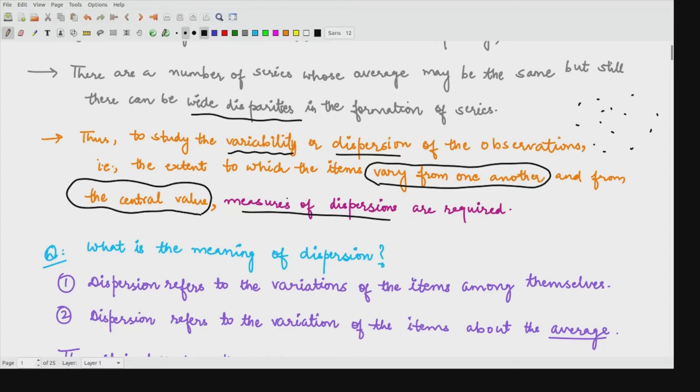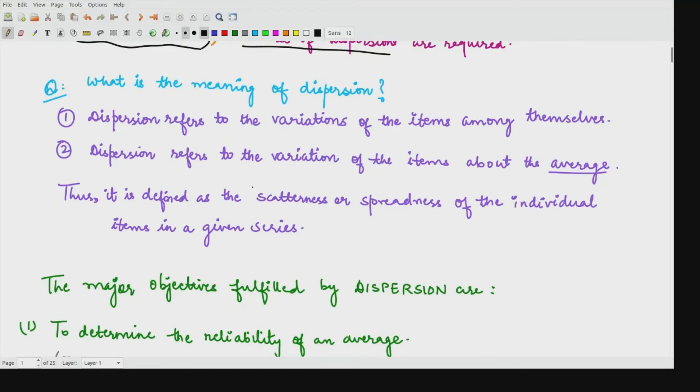What is the meaning of dispersion here? Dispersion refers to variations of the items among themselves. How much one particular item varies from the other item, that is the first thing. Second thing, how much is the variation of such items about average? Here we will study about the scatteredness or the spreadness of the individual items that are given in this series.